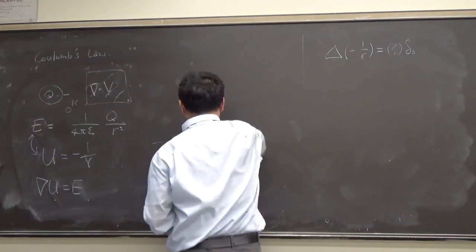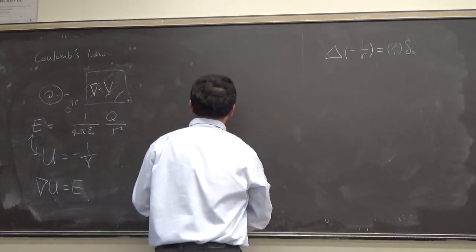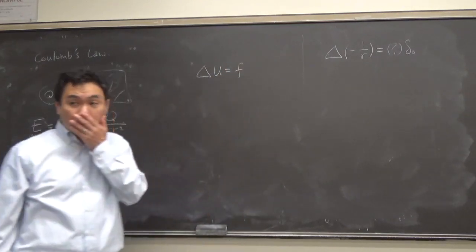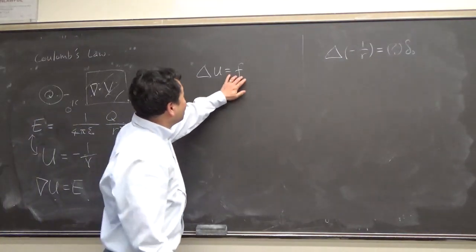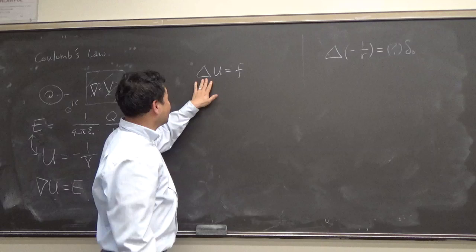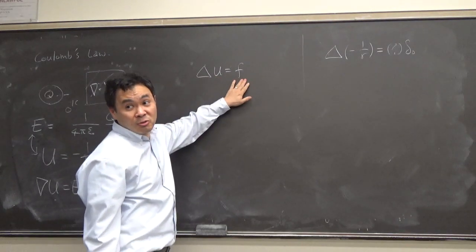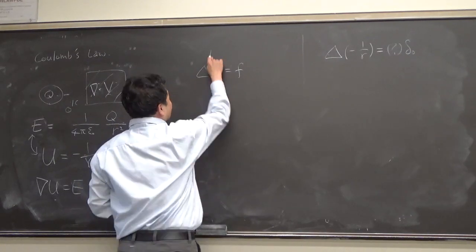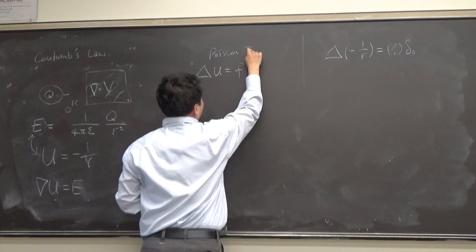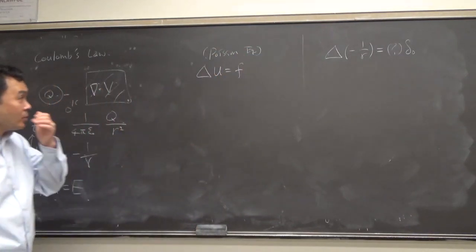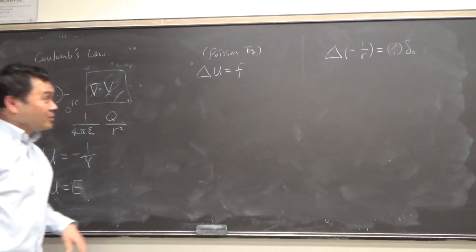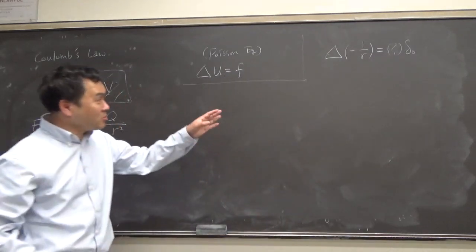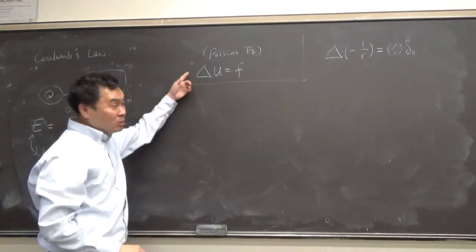In general, you can think about the following: if the right-hand side is zero, that's called the Laplace equation. If the Laplacian of u is equal to some function f, that's called the Poisson equation. Let me do one quick calculation and then follow up with this discussion.